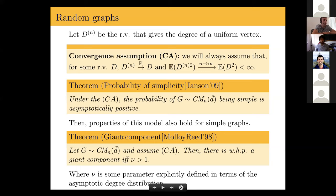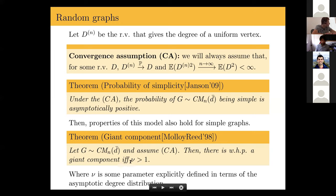Another important result in configuration model graphs is that there is a phase transition in the presence of a giant connected component. A connected component is a subset of vertices such that each pair of vertices is connected through a path of edges within the graph. A giant component exists when a connected component has asymptotically a positive proportion of all vertices. If some parameter depending on the asymptotic degree distribution is larger than one, then with high probability there will be a giant component — this is called a supercritical graph.